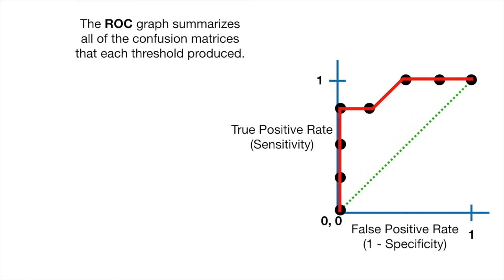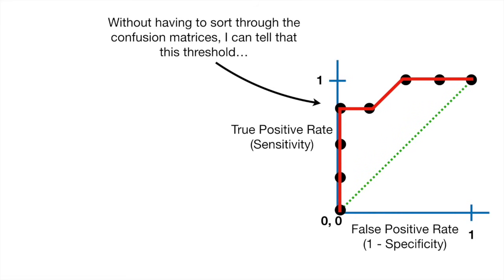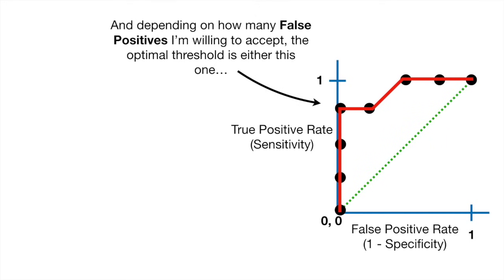The ROC graph summarizes all of the confusion matrices that each threshold produced. Without having to sort through individual confusion matrices, I can tell that this threshold is better than that one, and depending on how many false positives I'm willing to accept, the optimal threshold is either this one or this one. BAM!